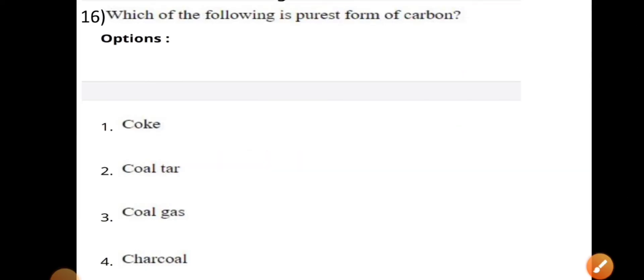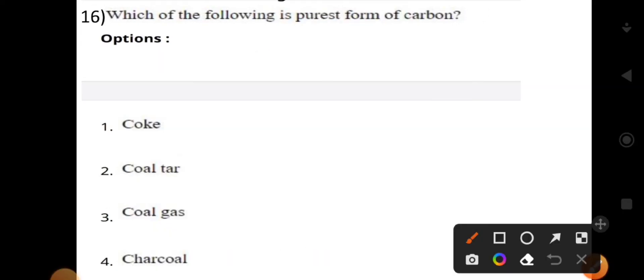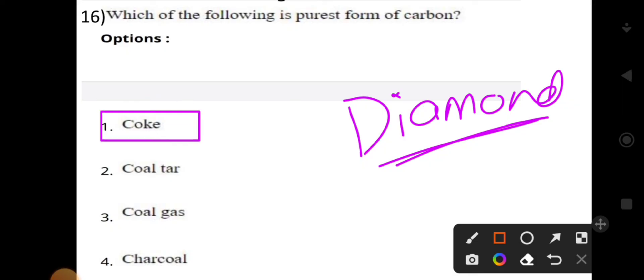Which of the following is the purest form of carbon? Normally, the purest form of carbon is diamond. But if diamond is not in the options, the correct answer is coke.